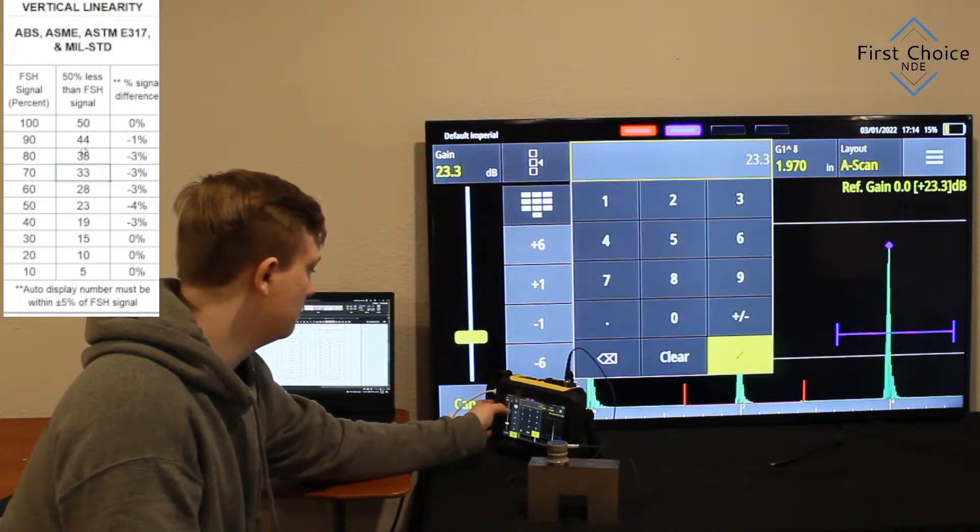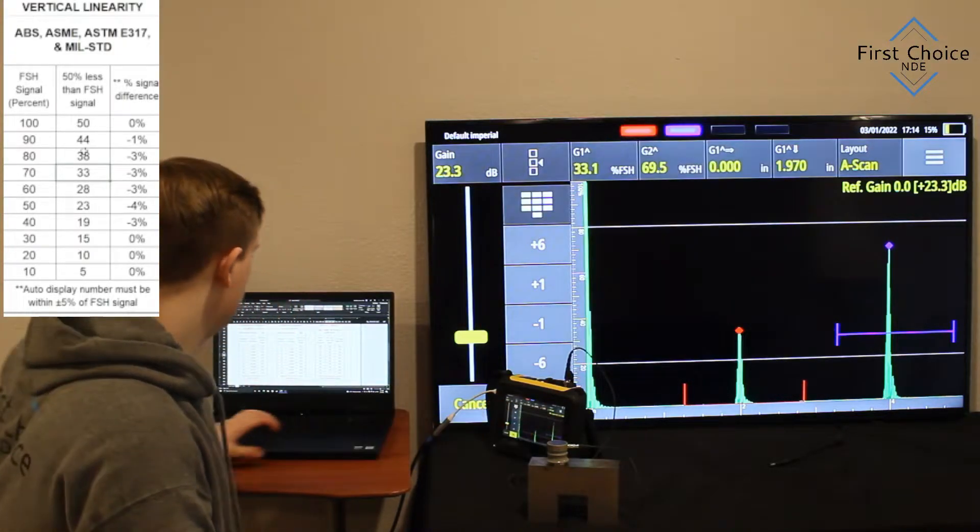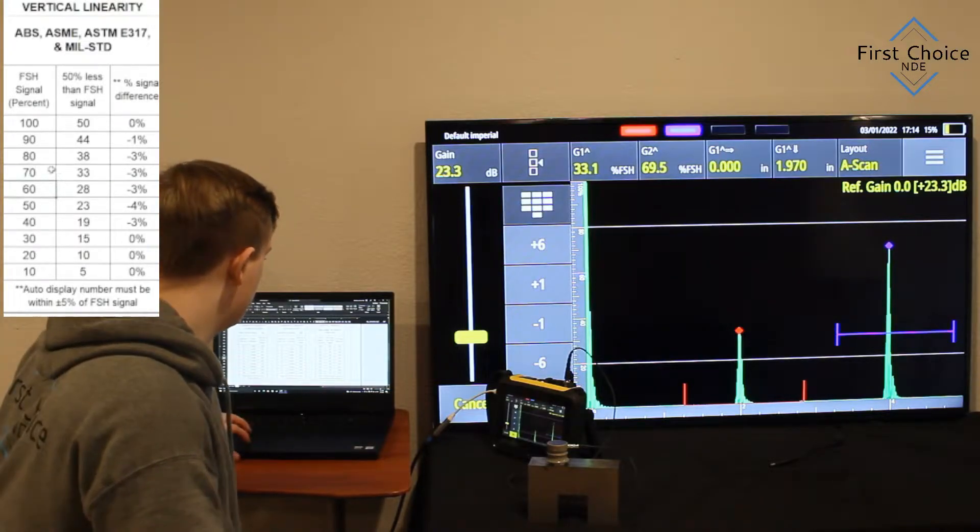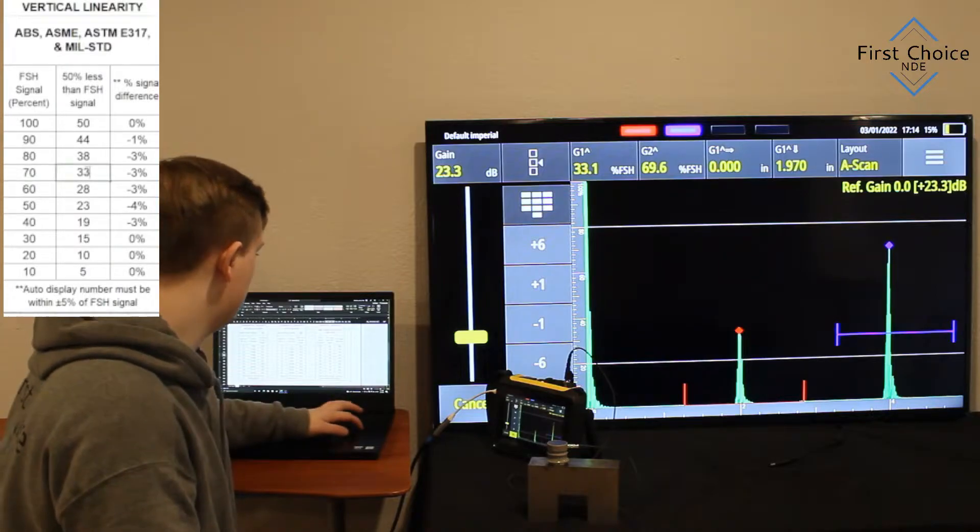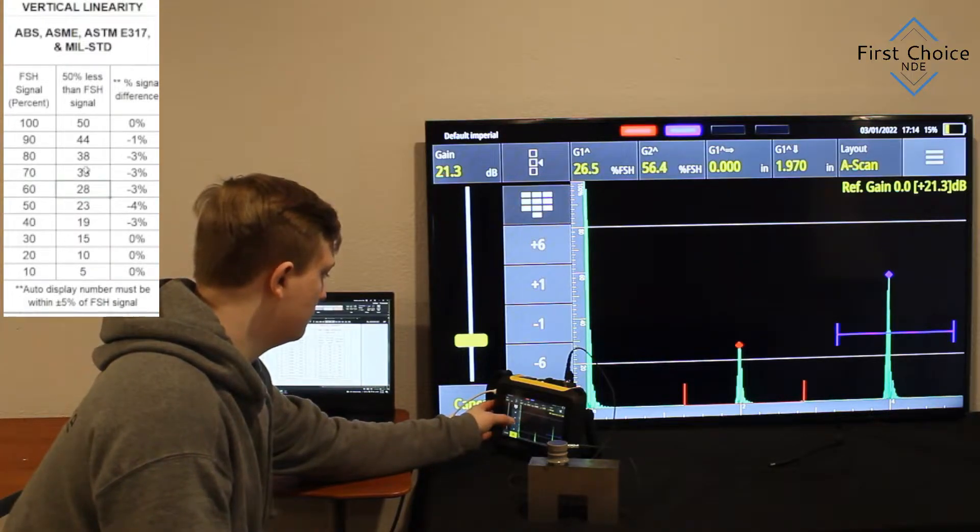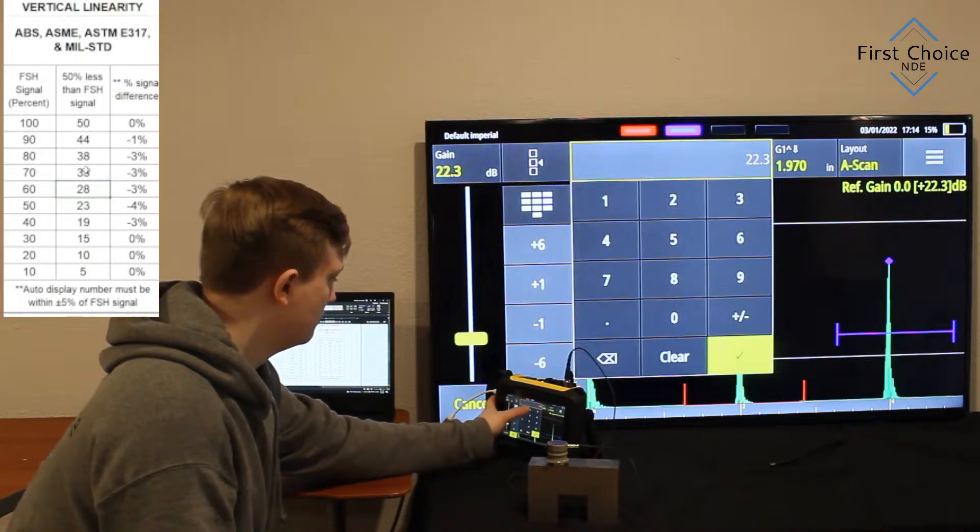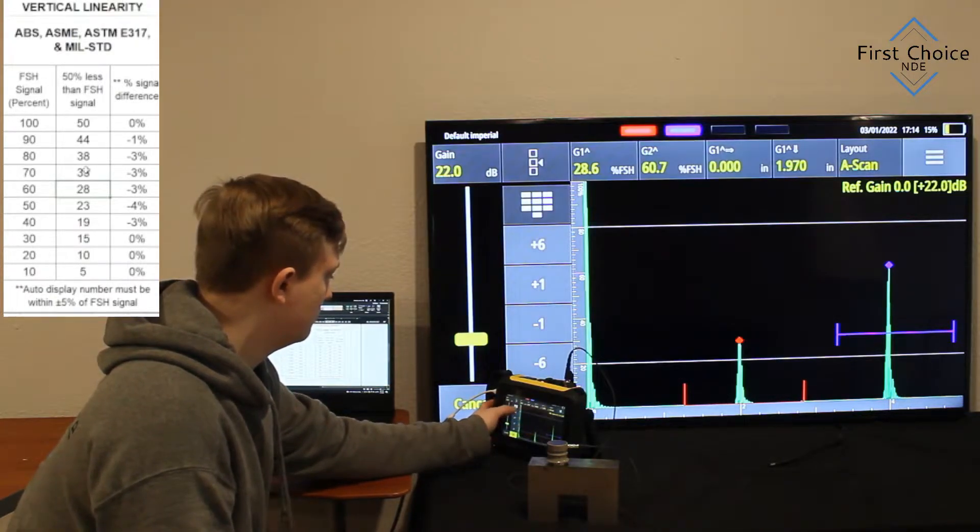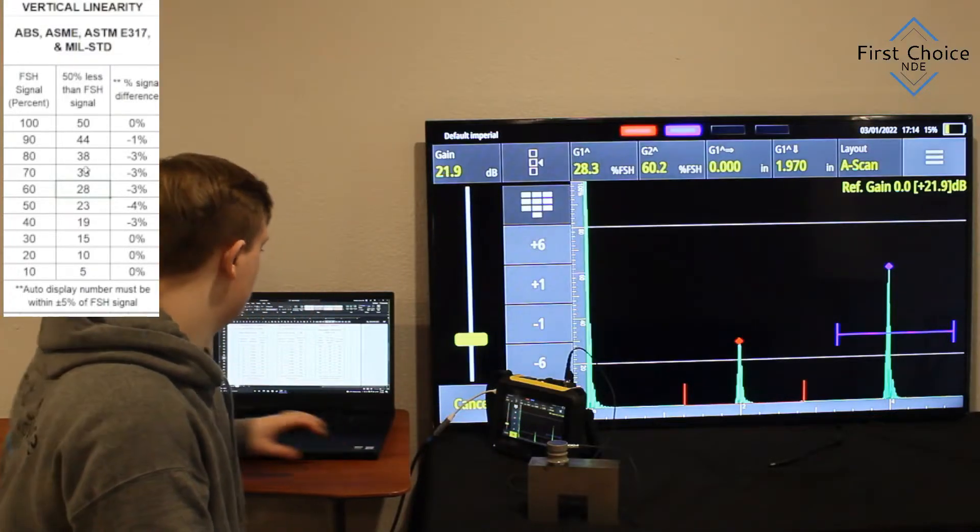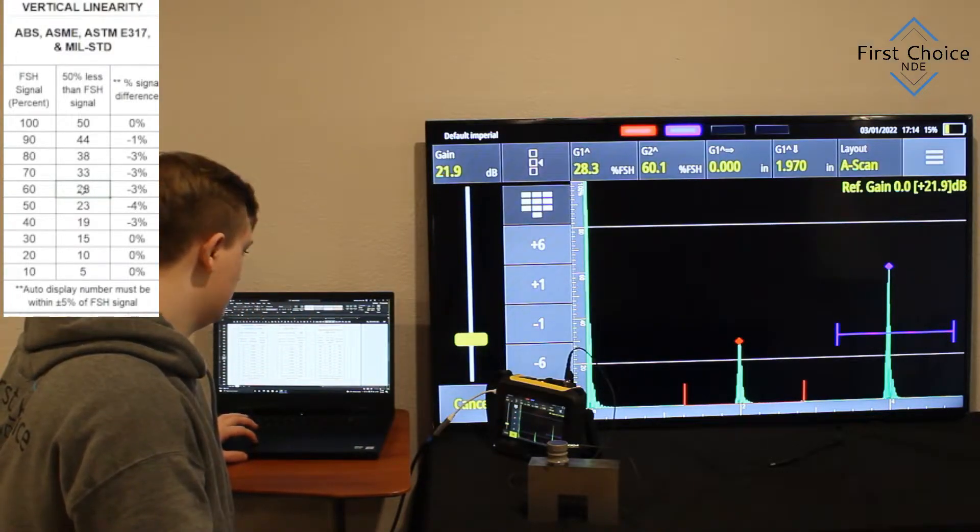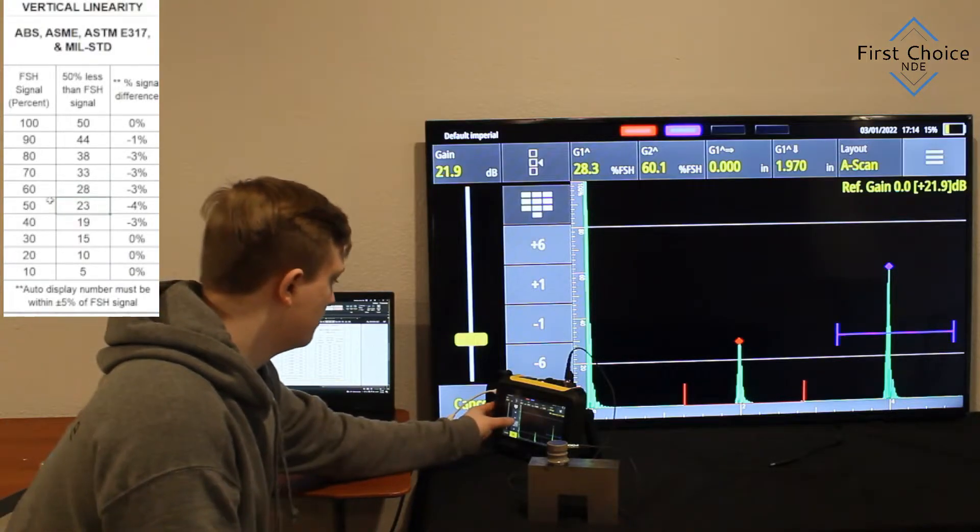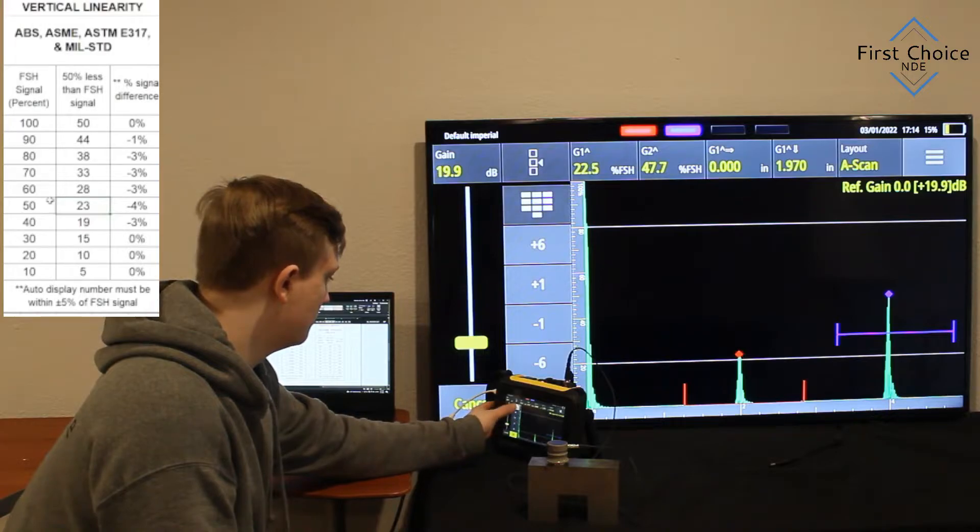So now we're on 70. 70% screen height on the right one, it's reading 69.5 roundup, and ours reads 33%. So another minus 3%. If you pay attention where the transducer is placed on the DS block, you'll see why we're getting that signal at 50%. So we have the larger signal is bouncing at the 4-inch mark, and the smaller signal is hitting the 2-inch mark.